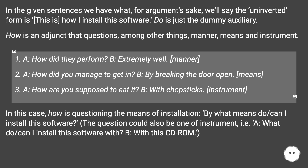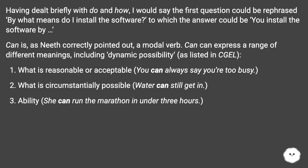In this case, 'how' is questioning the means of installation: 'by what means do/can I install this software?' The question could also be one of instrument — 'what do/can I install this software with?' answered by 'with this CD-ROM.' Having dealt briefly with 'do' and 'how,' the first question could be rephrased as 'by what means do I install the software,' to which the answer could be 'you install the software by...'